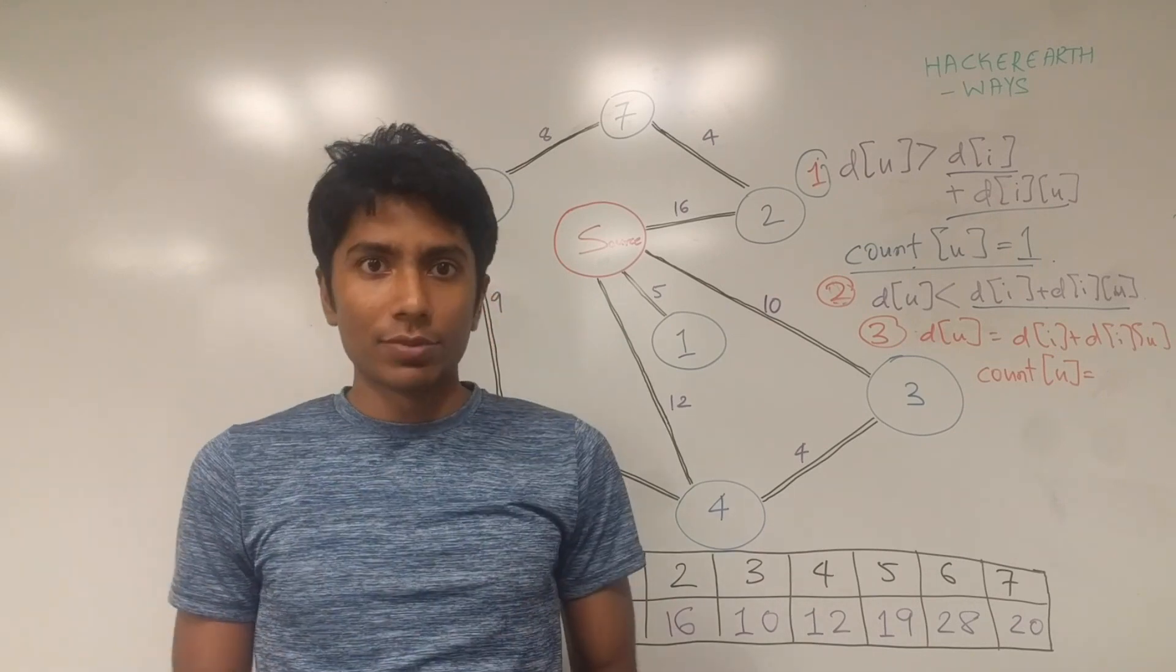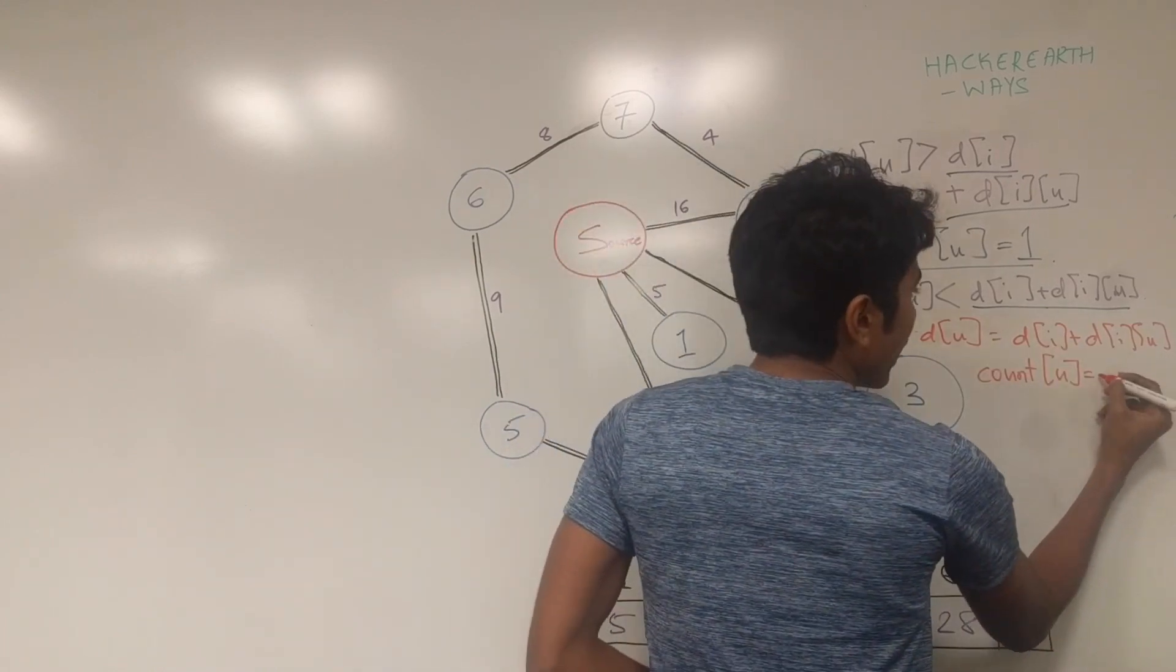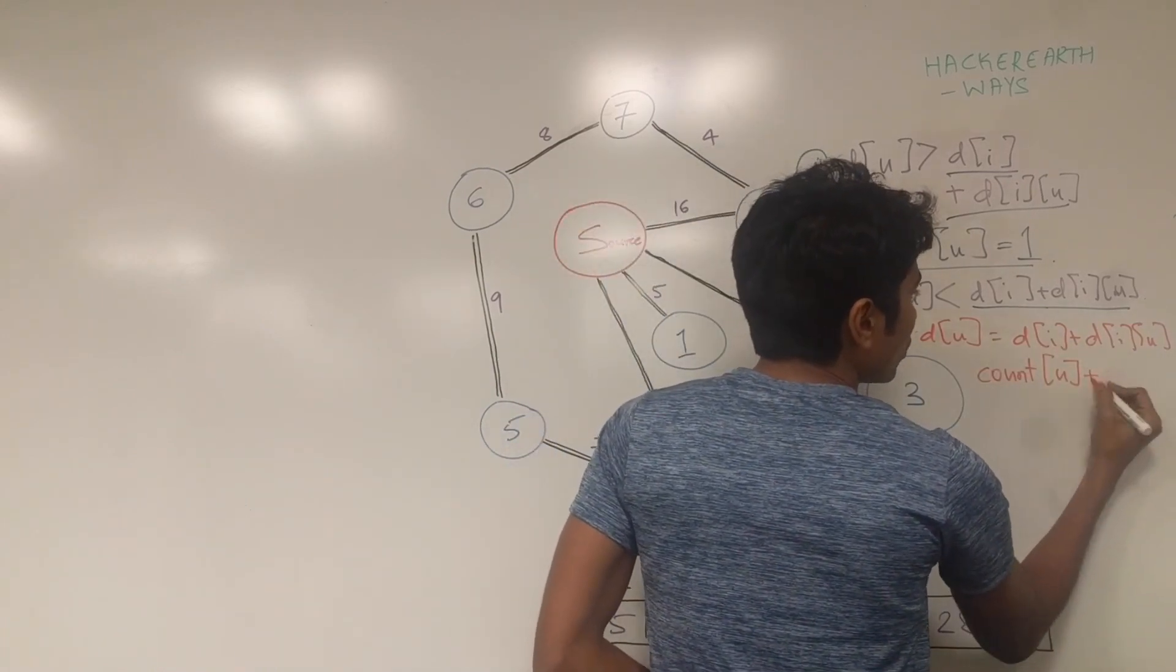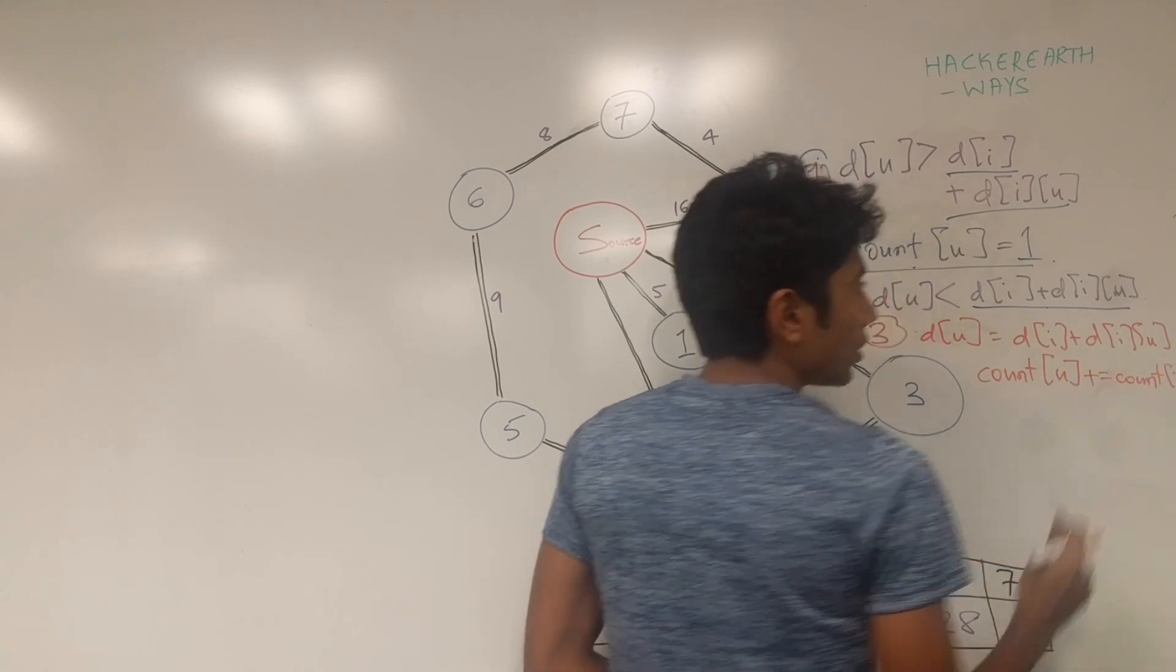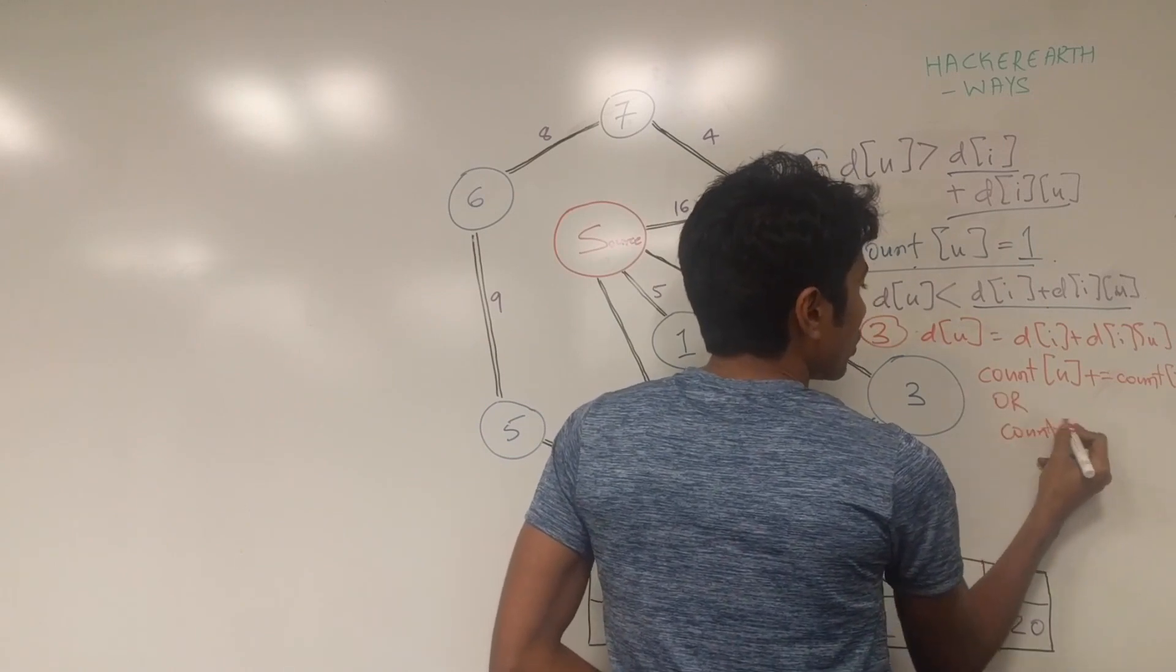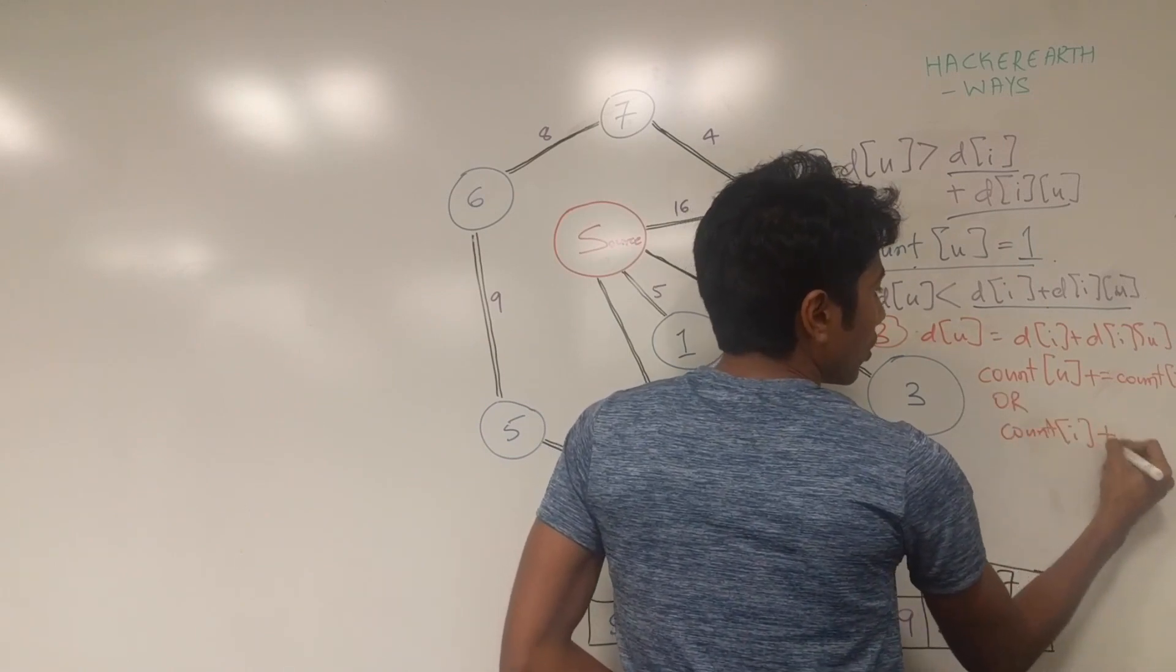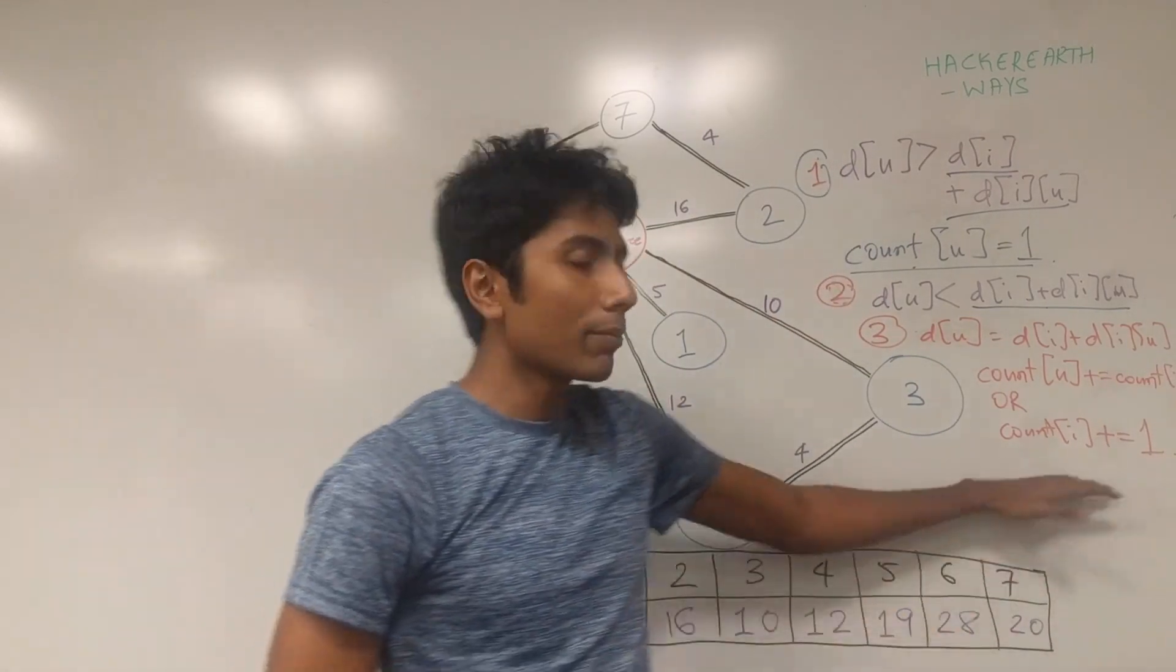Two possibilities mainly. You're using an intermediate city. So should it be added by plus equal to count of I, the intermediate city, or should it be equal to count plus 1? Now take your time, try to think of which condition you should use.